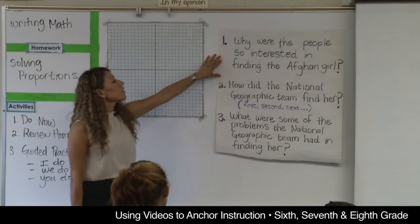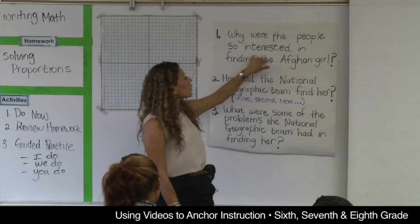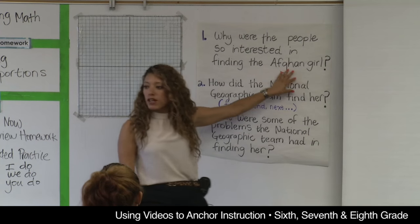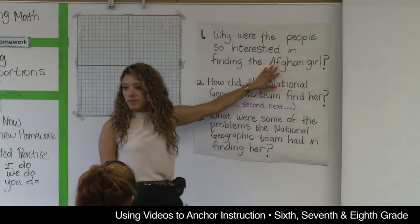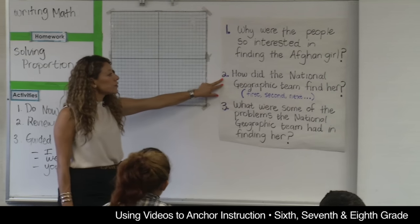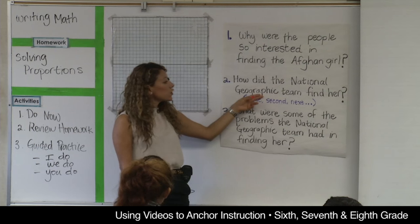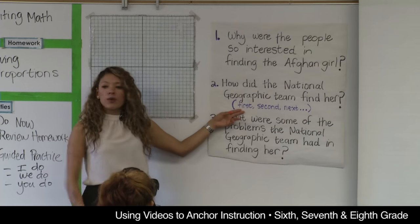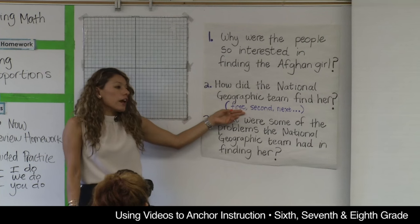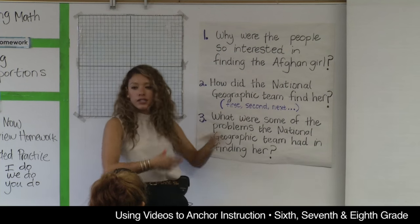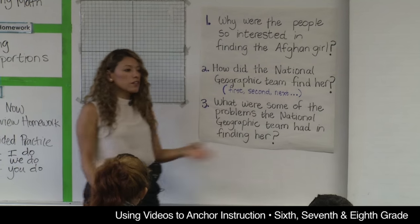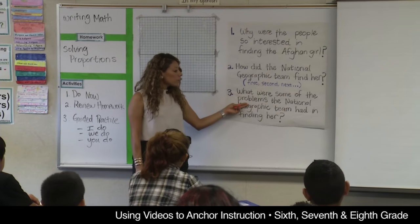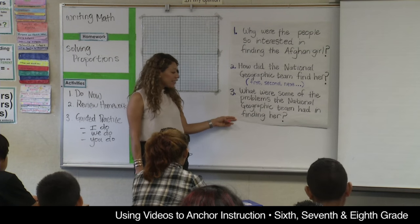Question number one: why were the people so interested in finding the Afghan girl? The Afghan girl is a young lady who is from Afghanistan. Question number two: how did the National Geographic team find her? There's going to be a sequence — you can answer by what happened first, what happened second, what happened next, and so on, because they did more than one thing. The last question is: what were some of the problems the National Geographic team had in finding her?